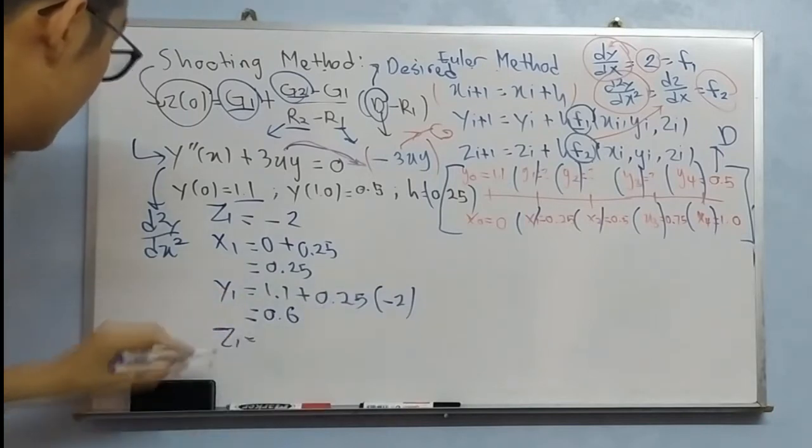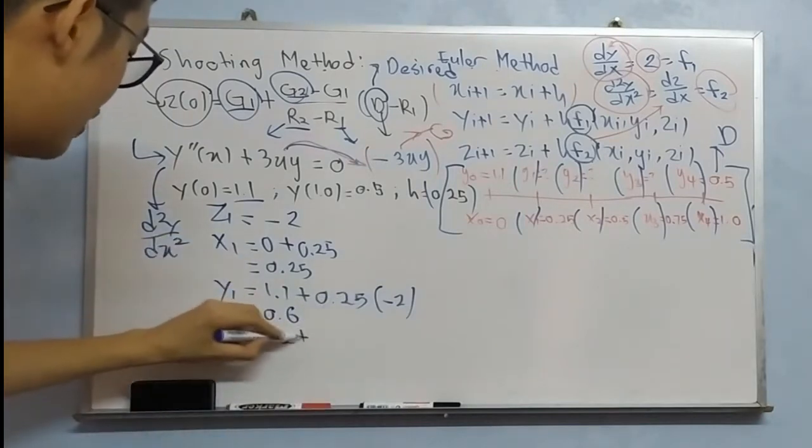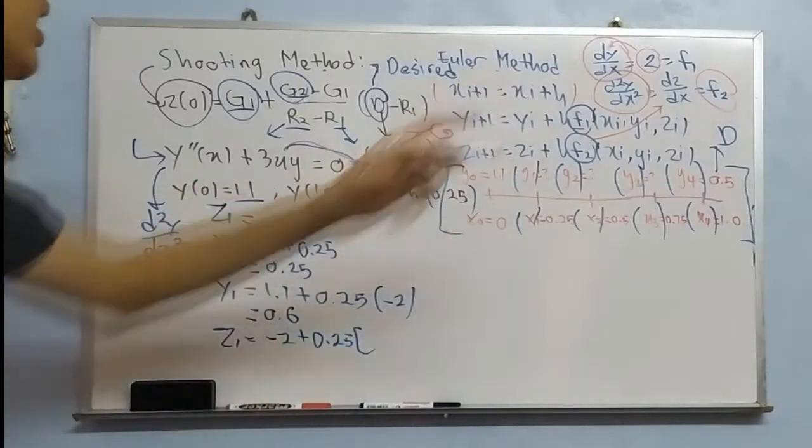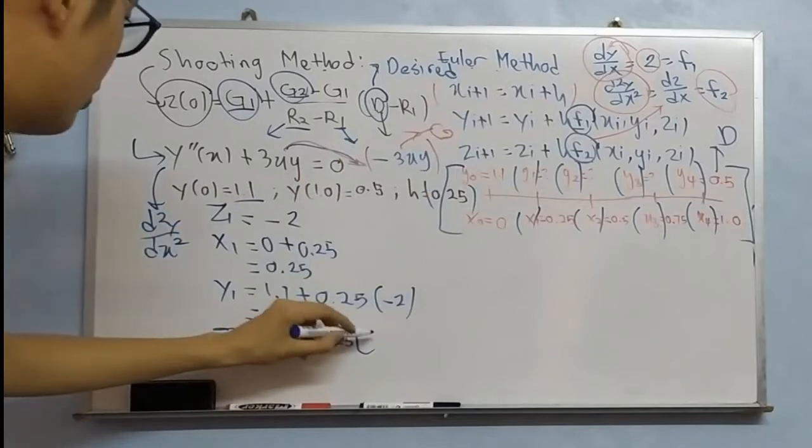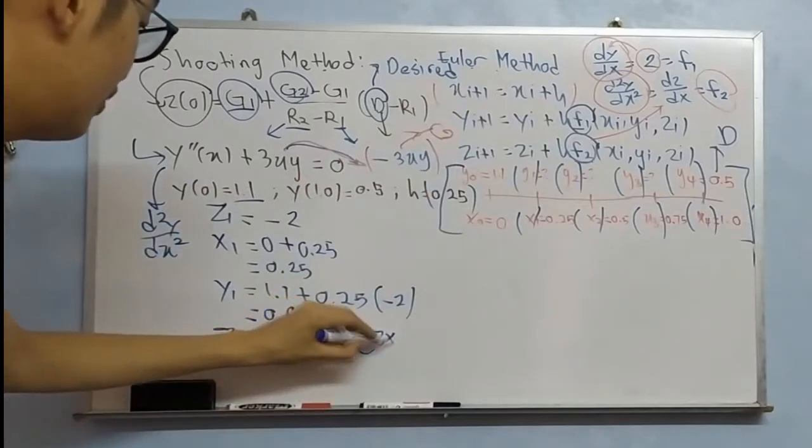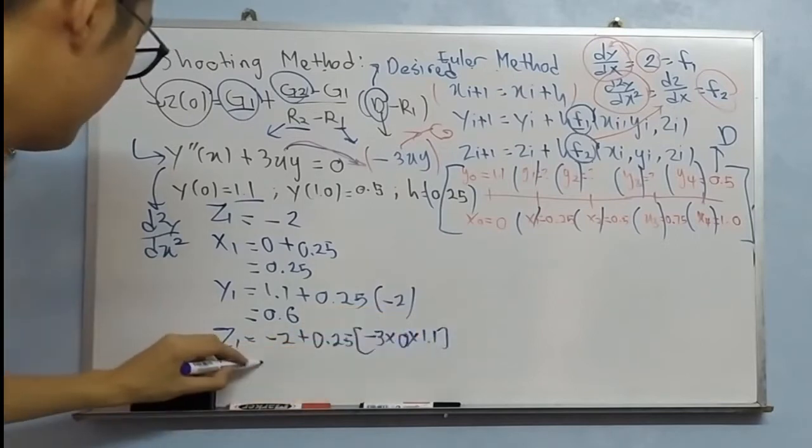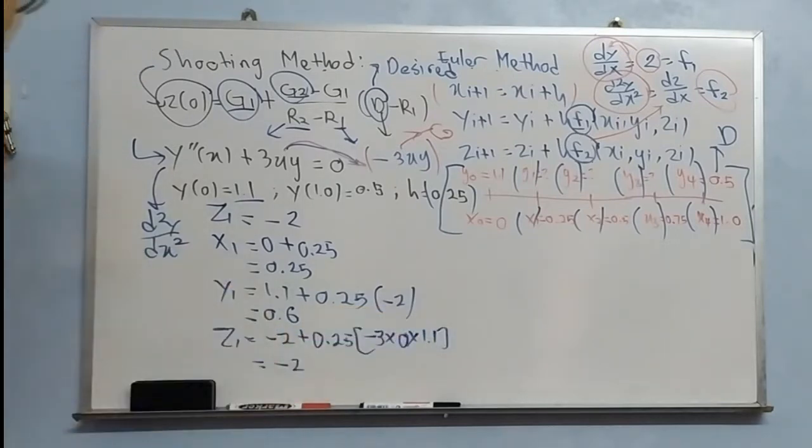For Z1, you will use negative 2 plus 0.25, but right now the function is F2. F2 is second derivative, negative 3xy. Negative 3 multiplied with 0, multiplied with 1.1, you get negative 2. So repeat the same procedure.